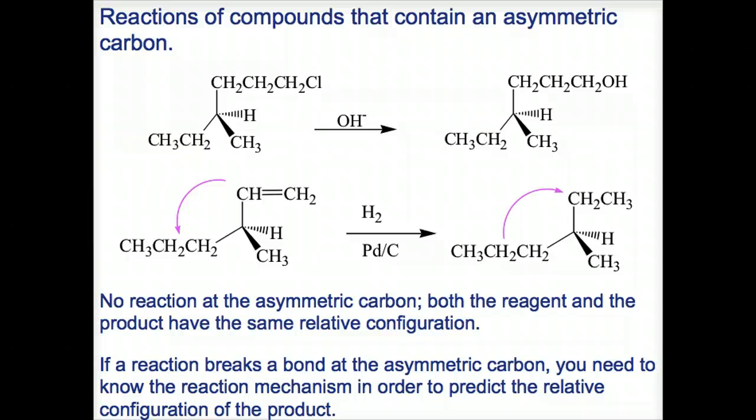That's illustrated right here. Here's our asymmetric carbon. It has 1, 2, 3, 4 different groups bonded to it. We have a reaction adding OH in the place of a chlorine. Notice, these four bonds are not affected at all. Therefore, the configuration of the product will be identical to the configuration of the reactant.